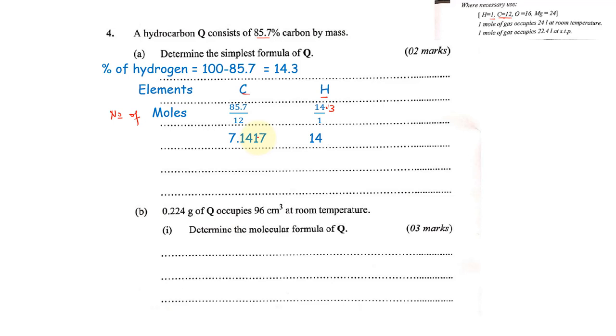From this, we can find the simplest ratio by dividing through by the smallest number of moles. In this case, carbon has the smallest number of moles. Divide through by 7.1417 both sides, and we shall have 1 to 1.96. Because we are looking for whole numbers, we shall need to round off this to around 2. So 1.96 is approximately equal to 2. That means one carbon atom will always pair with two hydrogen atoms. So the simplest formula of Q becomes CH2.